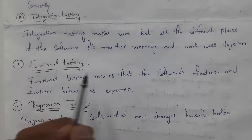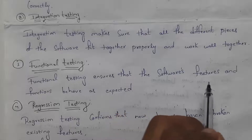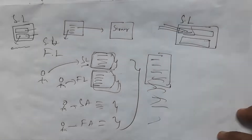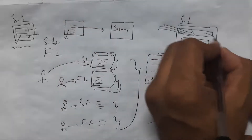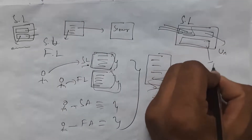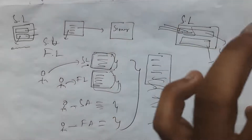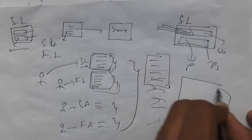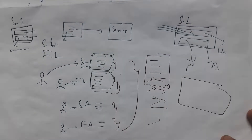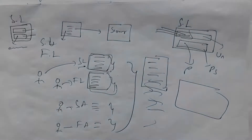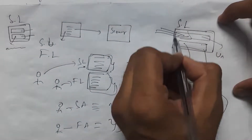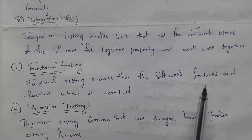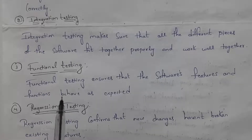The third is functional testing, which ensures that the software's features and functions behave as expected. For example, in a student login form, if due to some error in the code any password entered automatically opens the website, that is a functionality problem. Functional testing ensures that software features and functions behave as expected by testing the functionality of each feature.